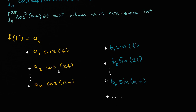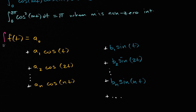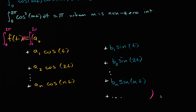In this video I'm going to first try to solve for a sub zero, and then in the next video we'll solve for an arbitrary a sub n, and either in that one or the next we'll also solve for an arbitrary b sub n. To solve for a sub zero, we're going to take the definite integral of both sides from zero to two pi — the integral of f of t equals the integral of all of this, remembering this is an infinite series with an infinite number of terms, with dt out there.